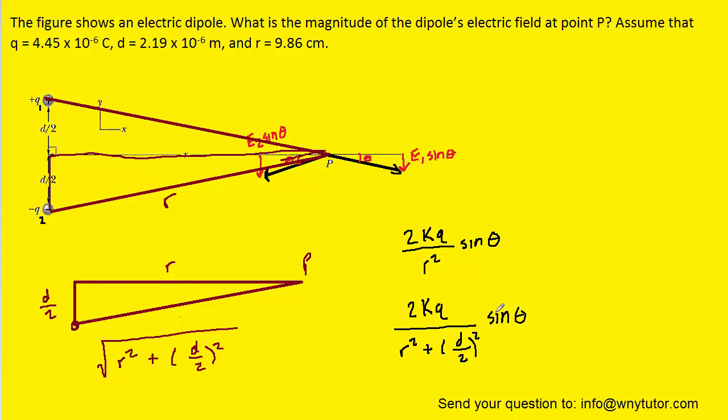We move on to the term that says sine of theta. Remember theta was marked in our original diagram, and we know that the sine of theta is the opposite side over the hypotenuse. The opposite to theta is D over 2, and the hypotenuse is this square root term.